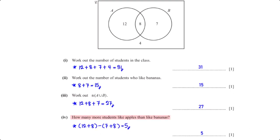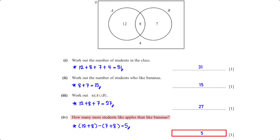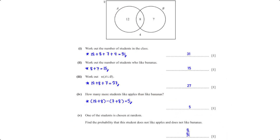How many more students like apples than like bananas? We find the difference: students who like apples is 12 plus 8, and students who like bananas is 7 plus 8. The difference is 5. One student is chosen at random — find the probability that this student does not like apples and does not like bananas. That probability is 4 divided by 31.